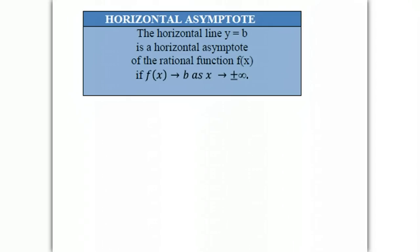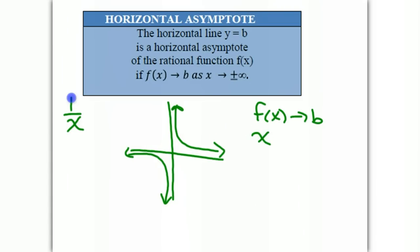Let's look at the parent function 1 over x. If we do a quick sketch of the function, we find that f(x) approaches b as x approaches positive or negative infinity.